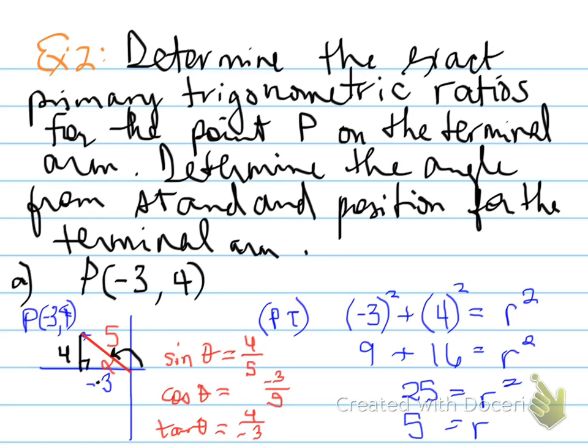So again, we would take sine inverse of four over five, and whatever that value is would end up being our reference angle, or our alpha. That's here in the corner, our reference angle alpha. And then from that we would get the value.